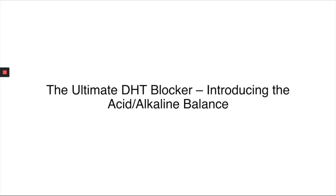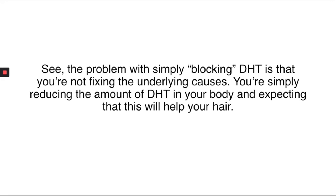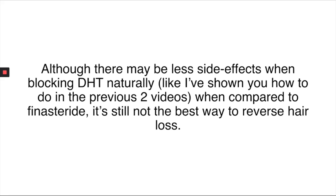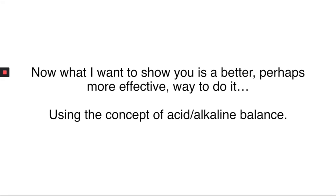The ultimate DHT blocker we're introducing is the acid and alkaline balance. The problem with simply blocking dihydrotestosterone is that you're not fixing the underlying causes — you're simply reducing the amount of DHT in your body and expecting that to help your hair. Although there may be fewer side effects when blocking DHT naturally compared to things like finasteride, it's still not the best way to reverse hair loss. A better, perhaps more effective way is the concept of the acid alkaline balance.